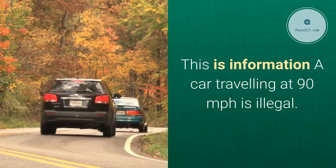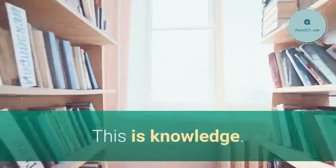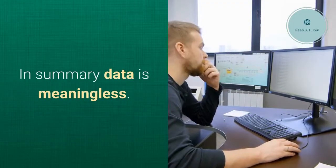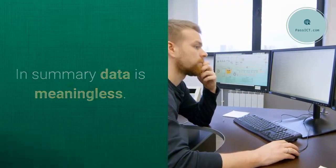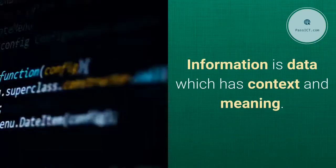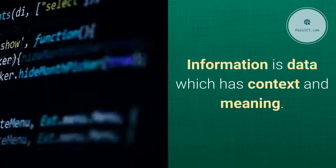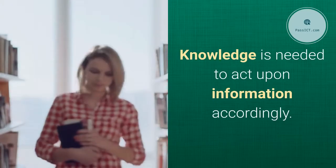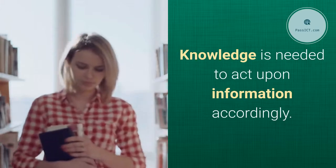A car traveling at 90 miles per hour is illegal — this is knowledge. In summary: data is meaningless; information is data which has context and meaning; knowledge is needed to act upon information accordingly.